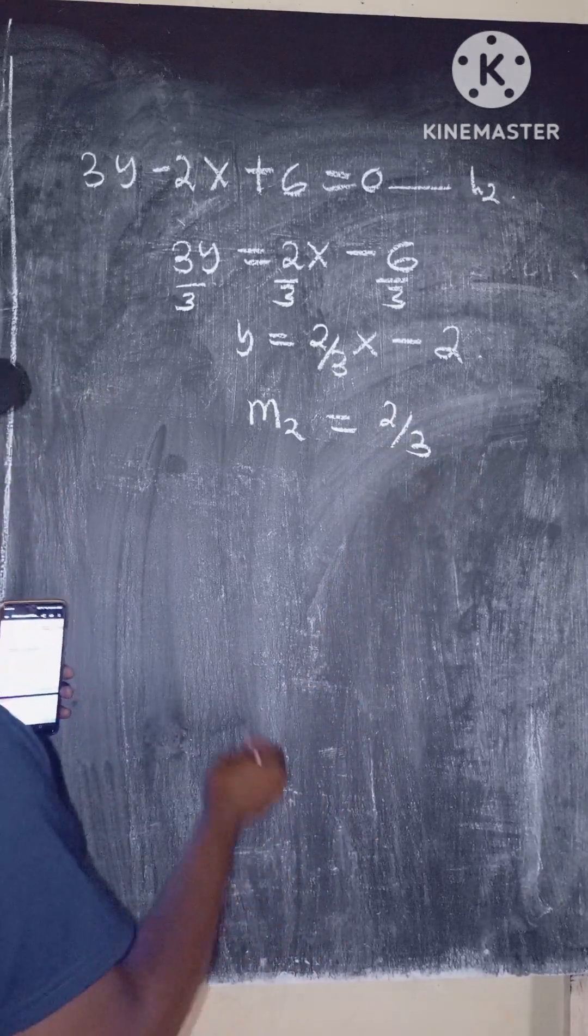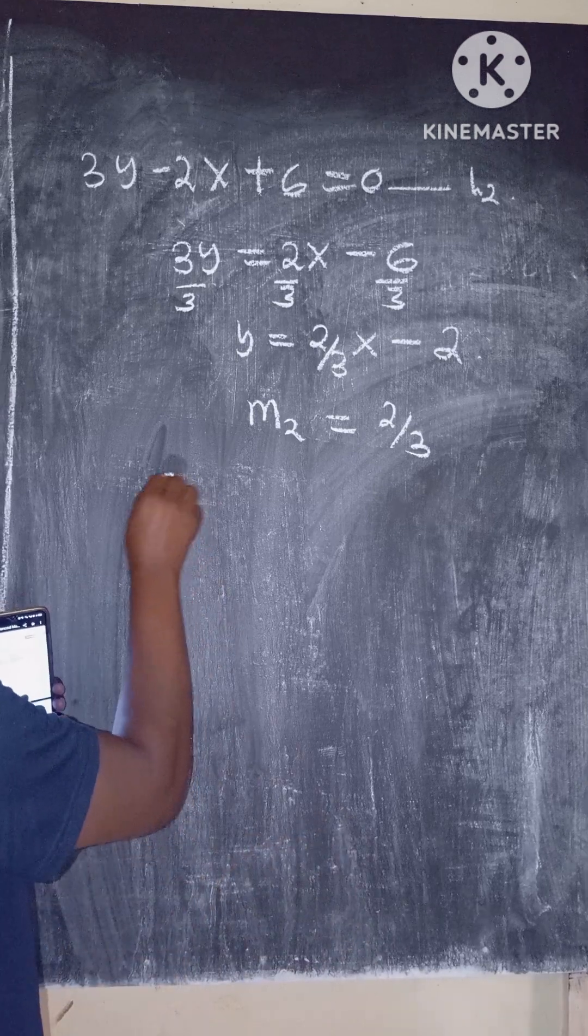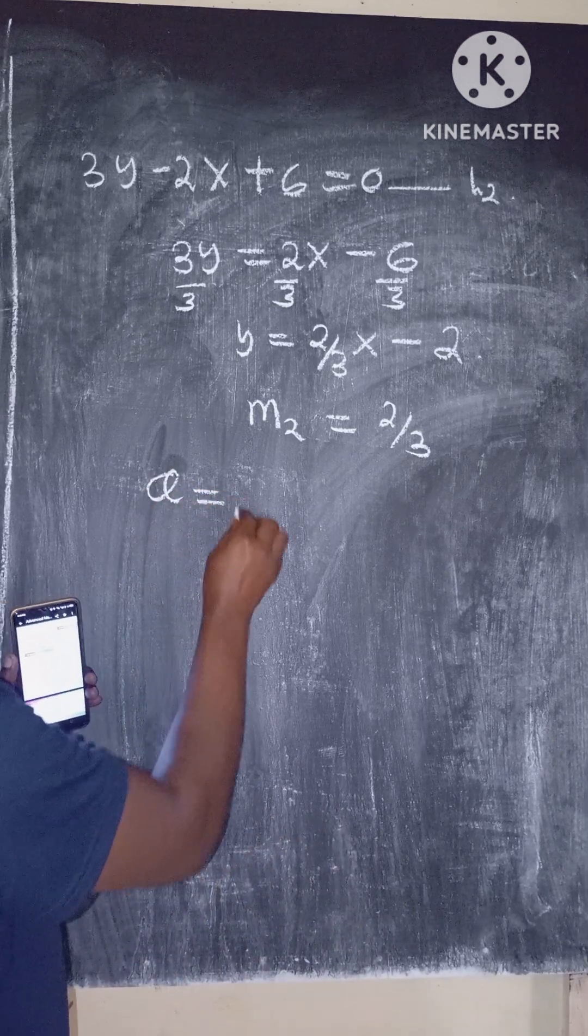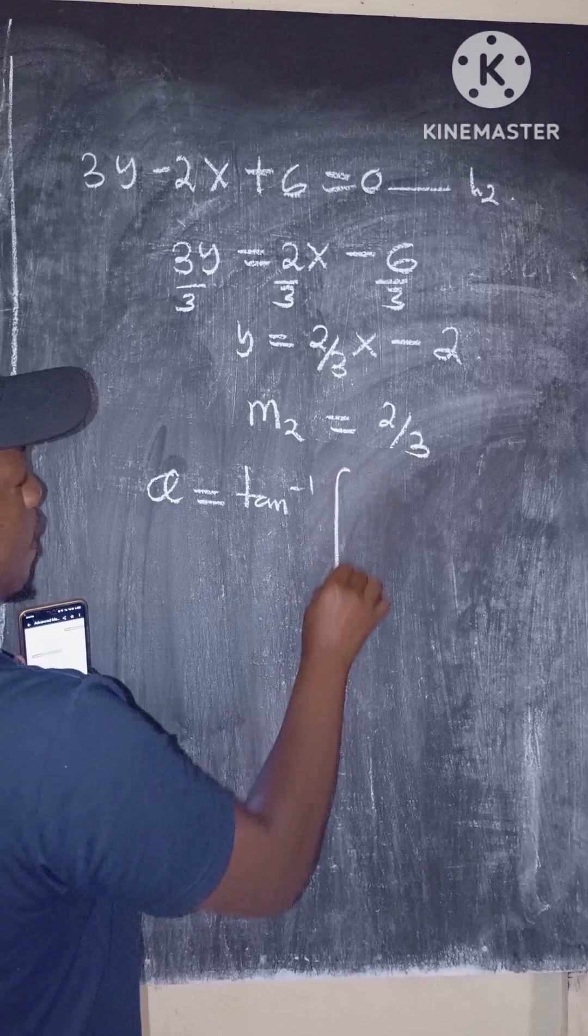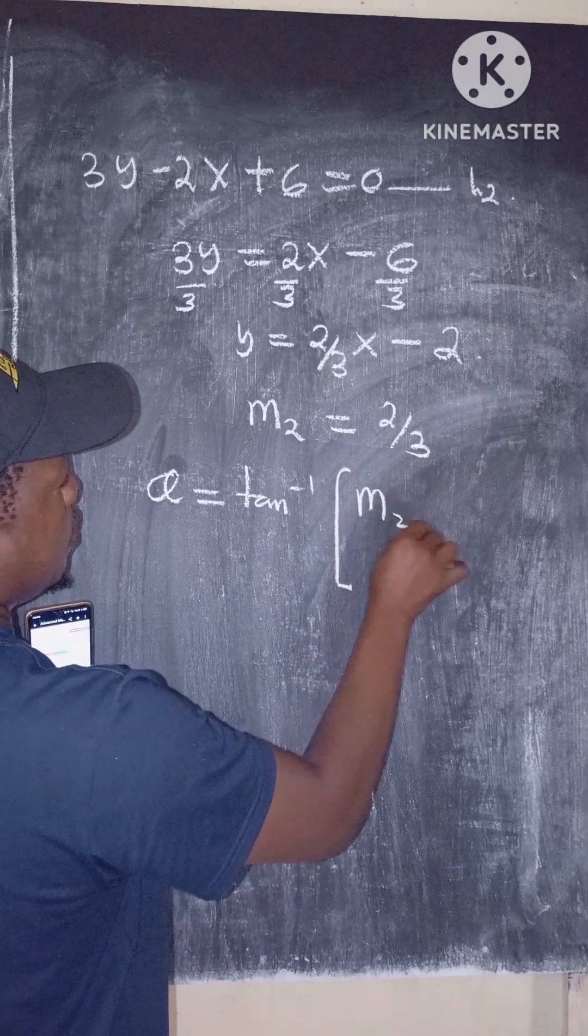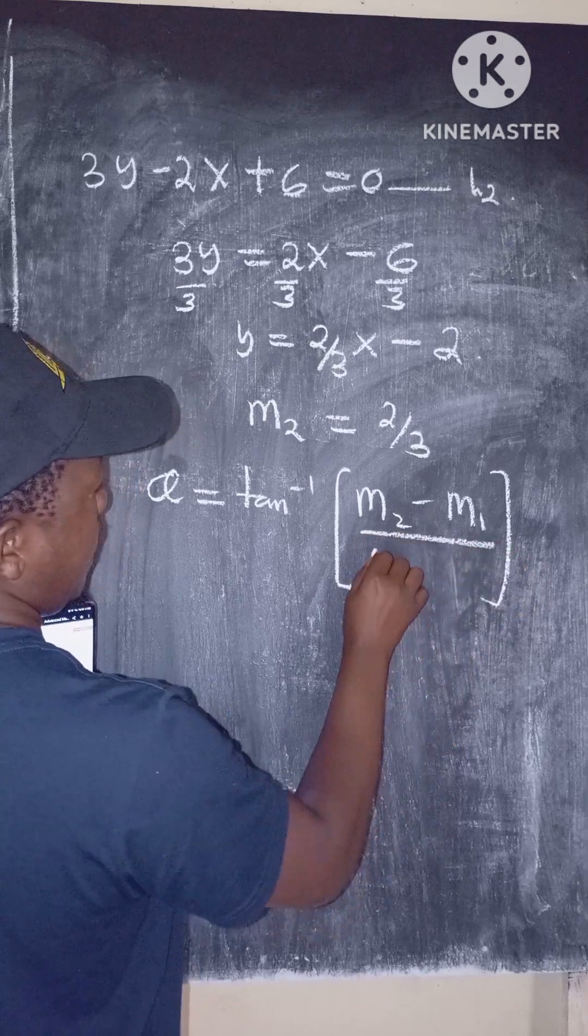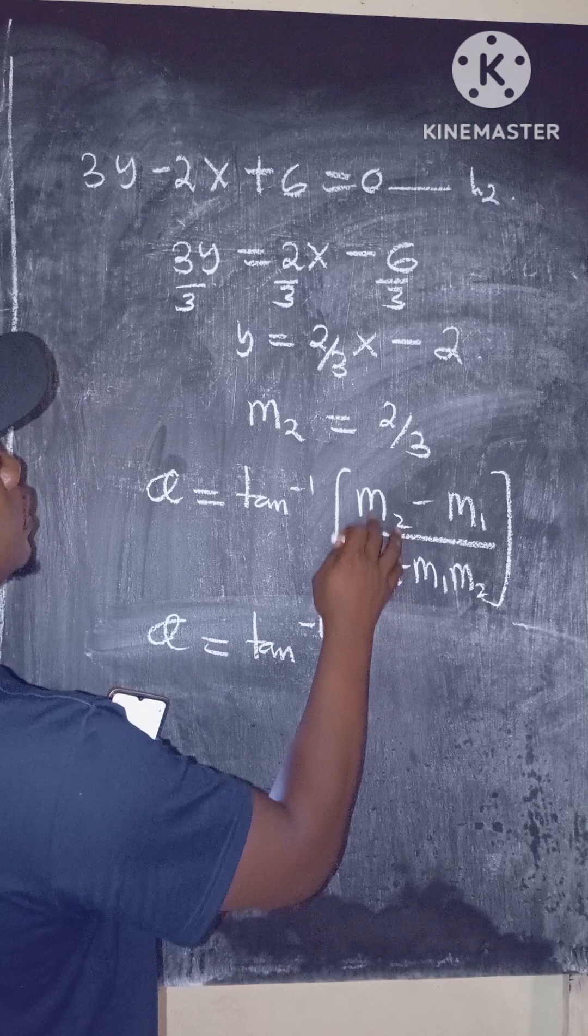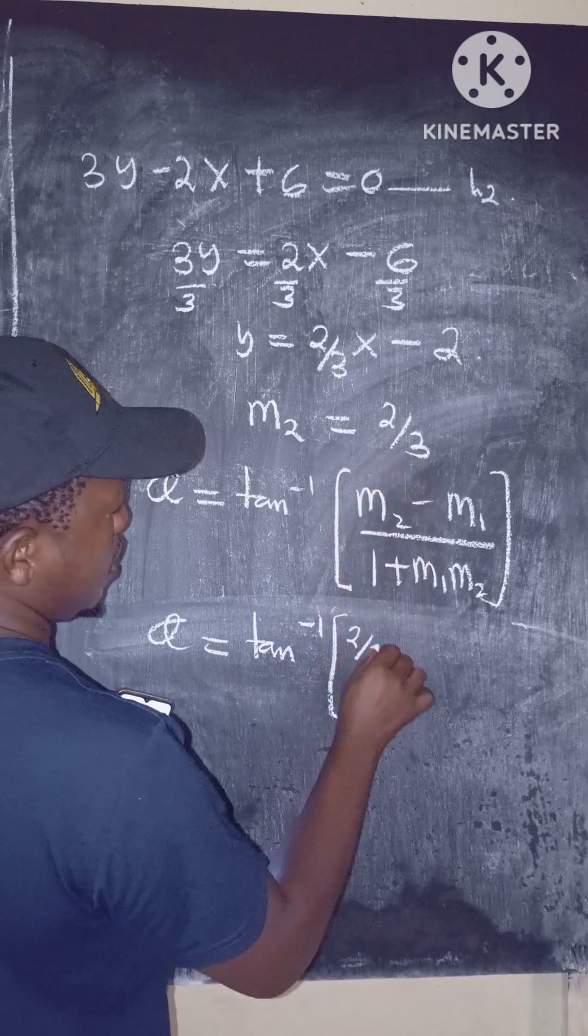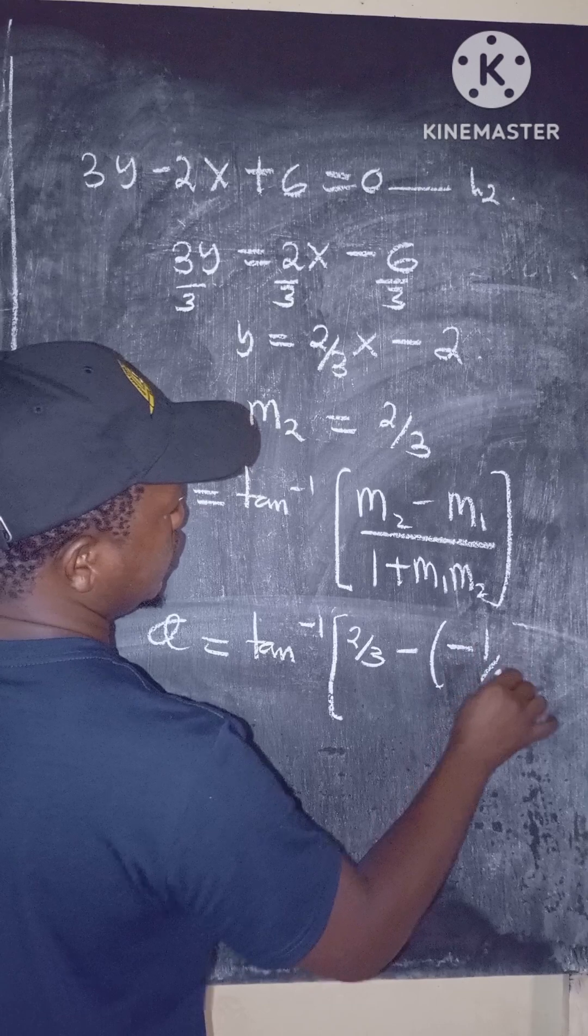We have two slopes. To find the acute angle, we recall theta equals tan inverse of m2 minus m1 over 1 plus m1 m2. Substituting, we get 2 over 3 minus negative one-half